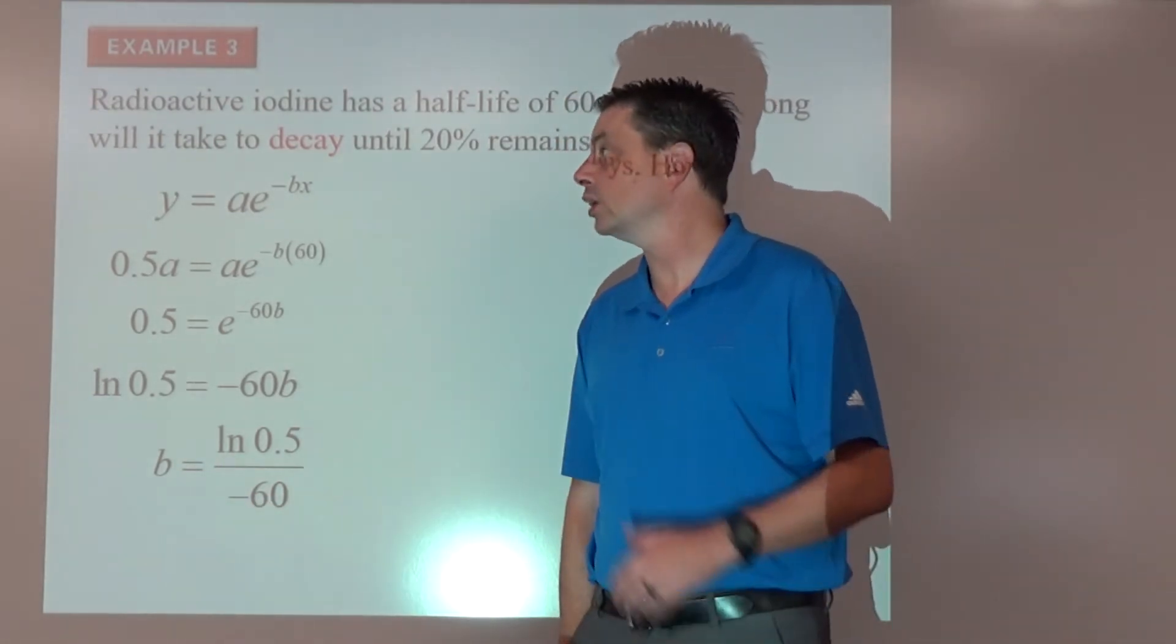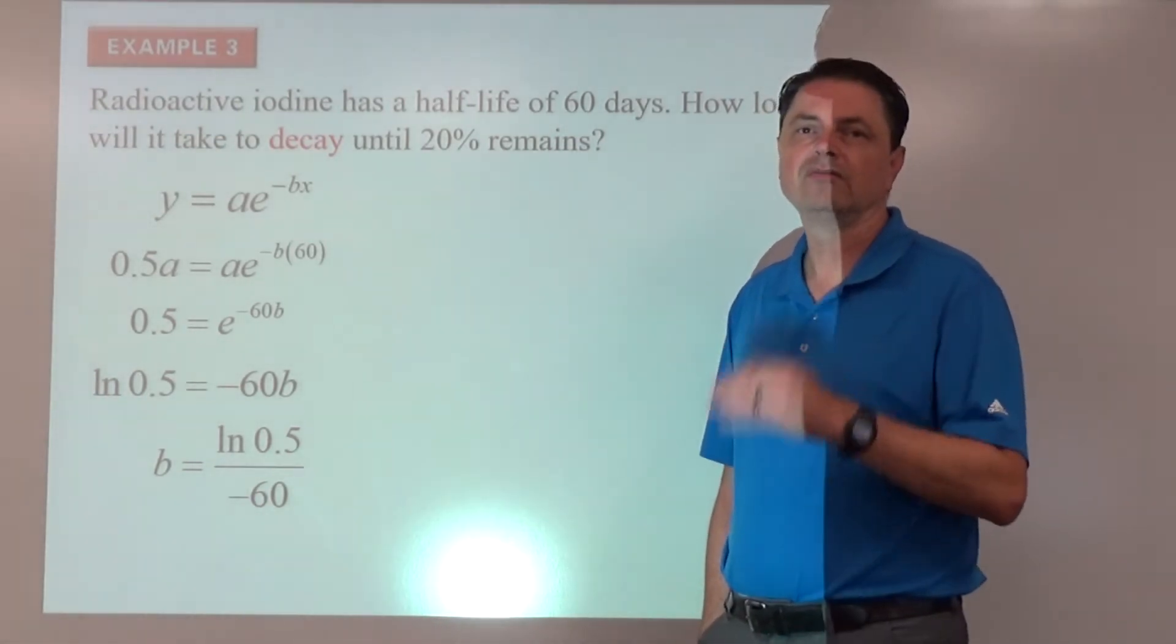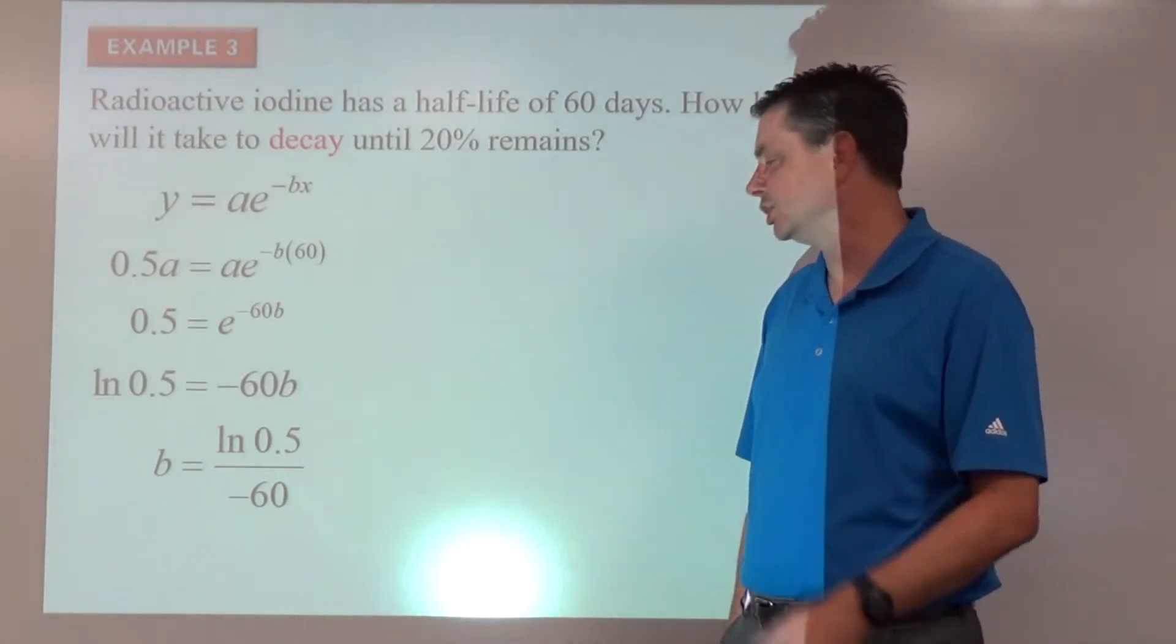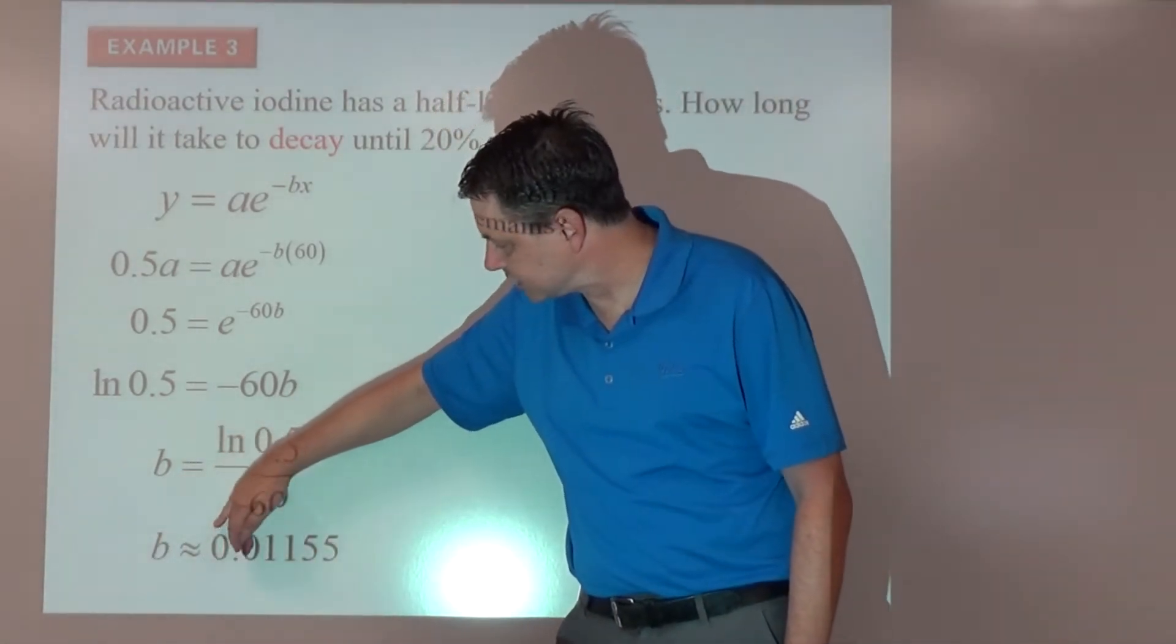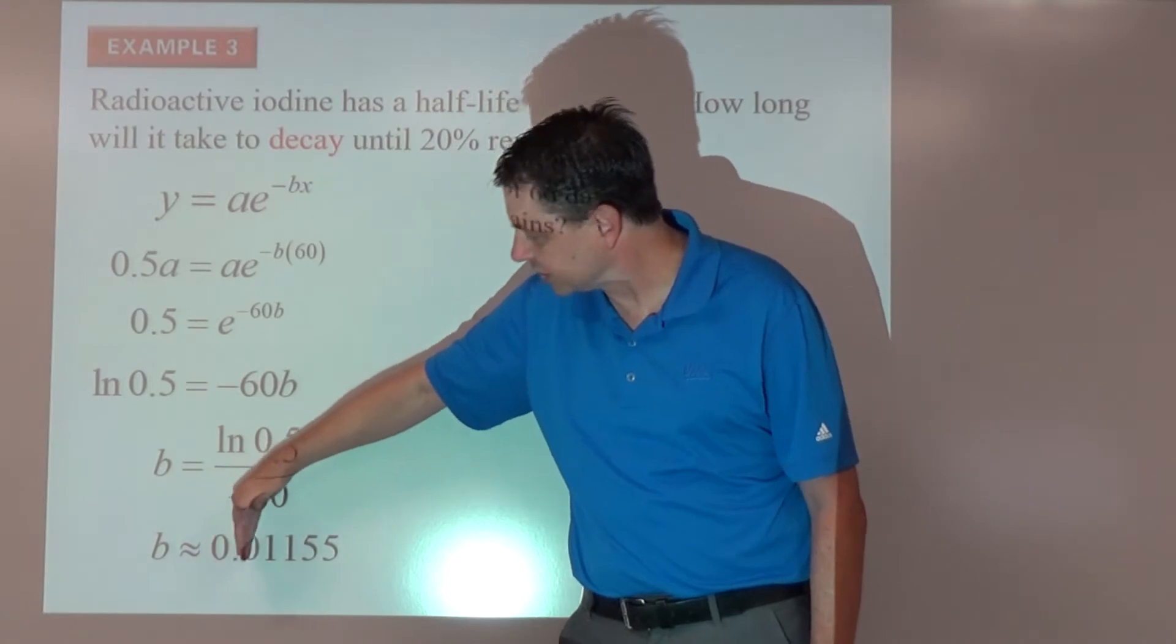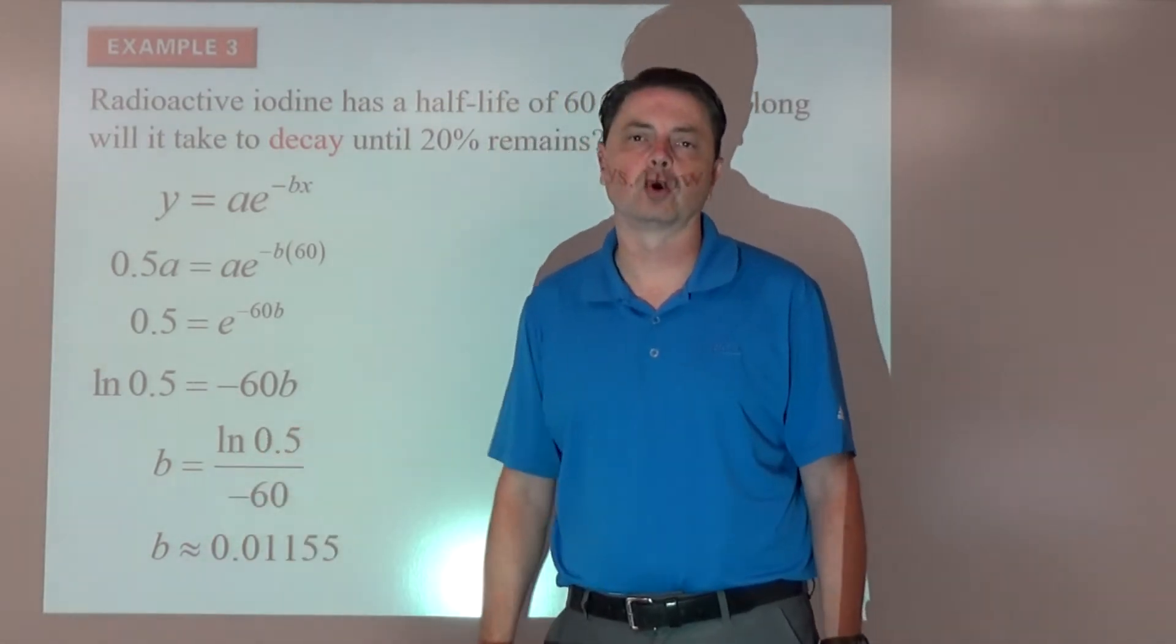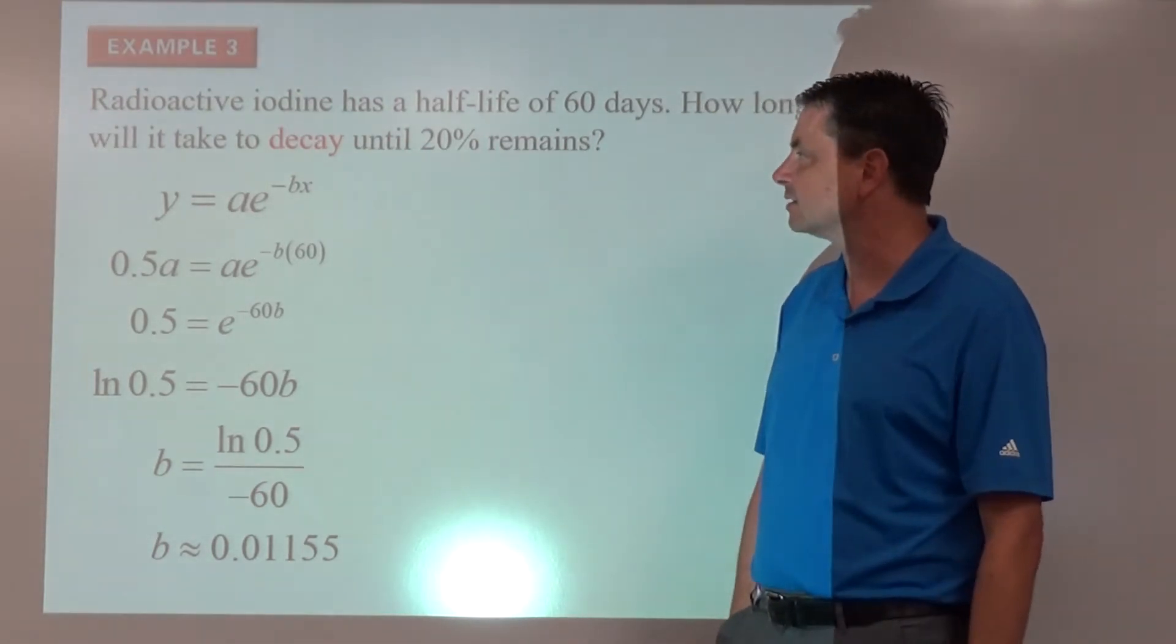And then we're going to go ahead and approximate that. And the way that we're going to standardize this is we're going to go four significant figures or significant digits. So we will go b is about 0.0. So here's where our significant digits start, not with any of the zeros before. But the first non-zero is 1, 1, 5, 5. Those are our four significant digits. So that's what we're going to approximate the b as.